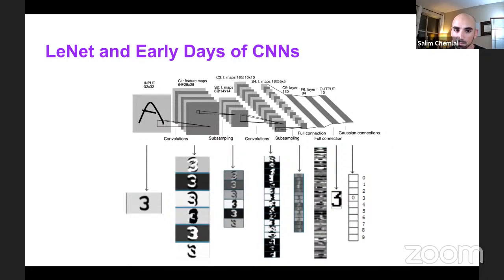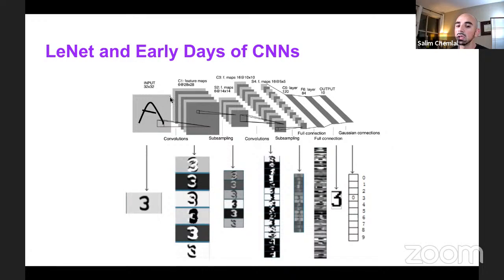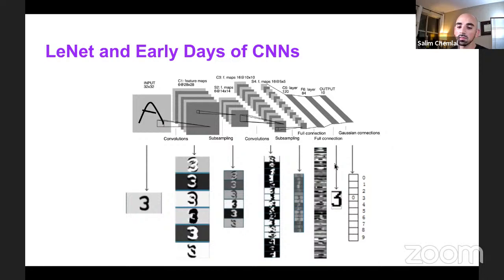This is a slide we saw already. This is the MNIST dataset we applied LeNet on. What we talked about — these are feature maps. They extract low-level features like edges and so forth. After every conv layer, we extract features to get to our final results. For MNIST, we're classifying from 0 to 9.